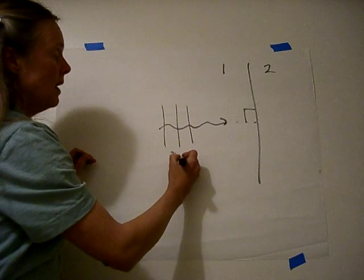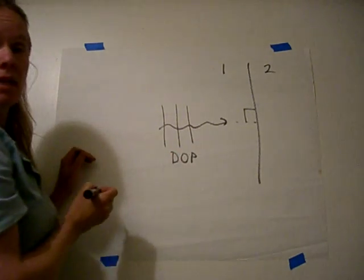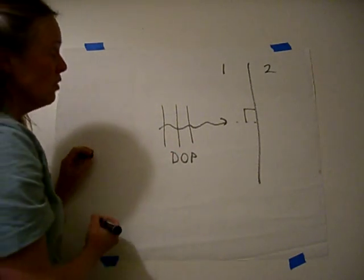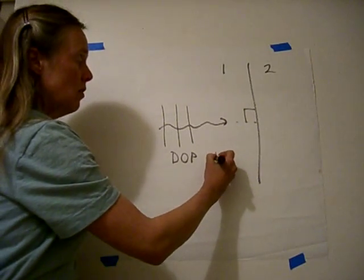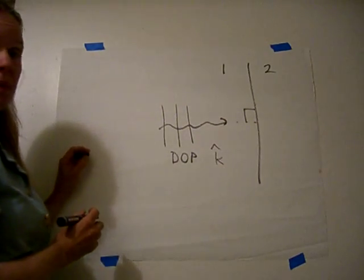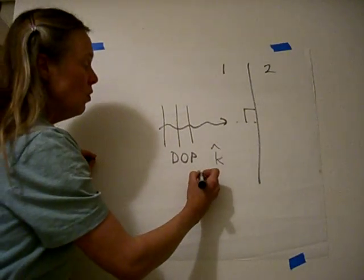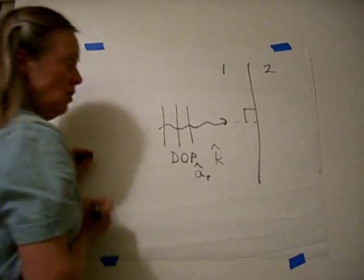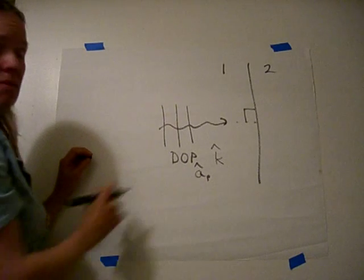This is the direction of propagation, sometimes called DOP, direction of propagation. Also the K vector, unit vector in the direction of propagation is often used. Your book uses a unit vector AP, P for the propagation.